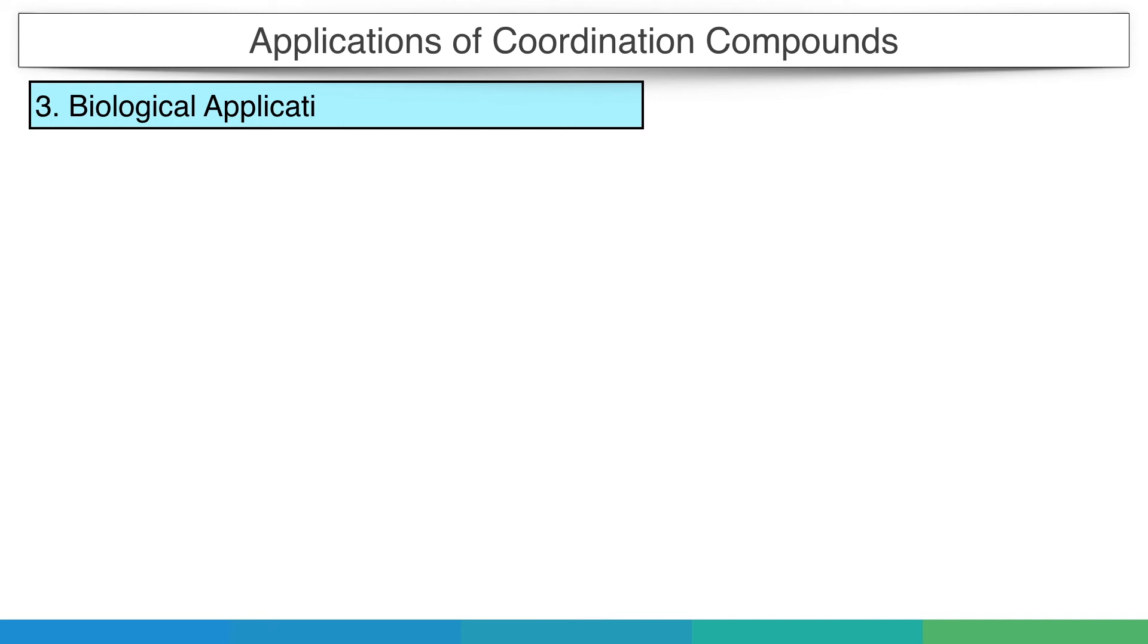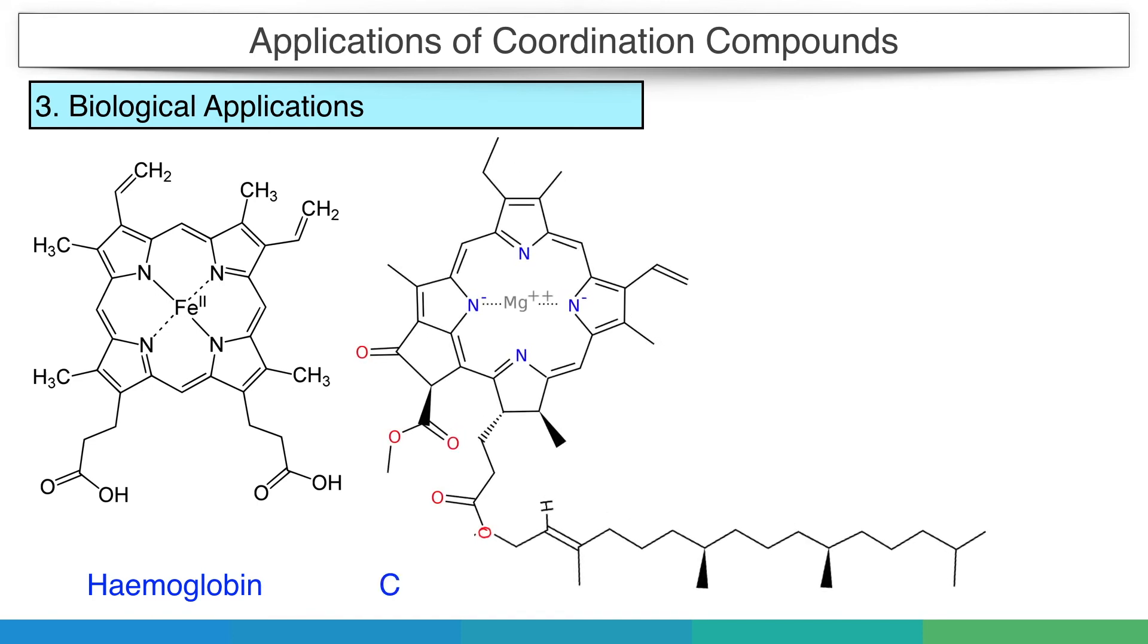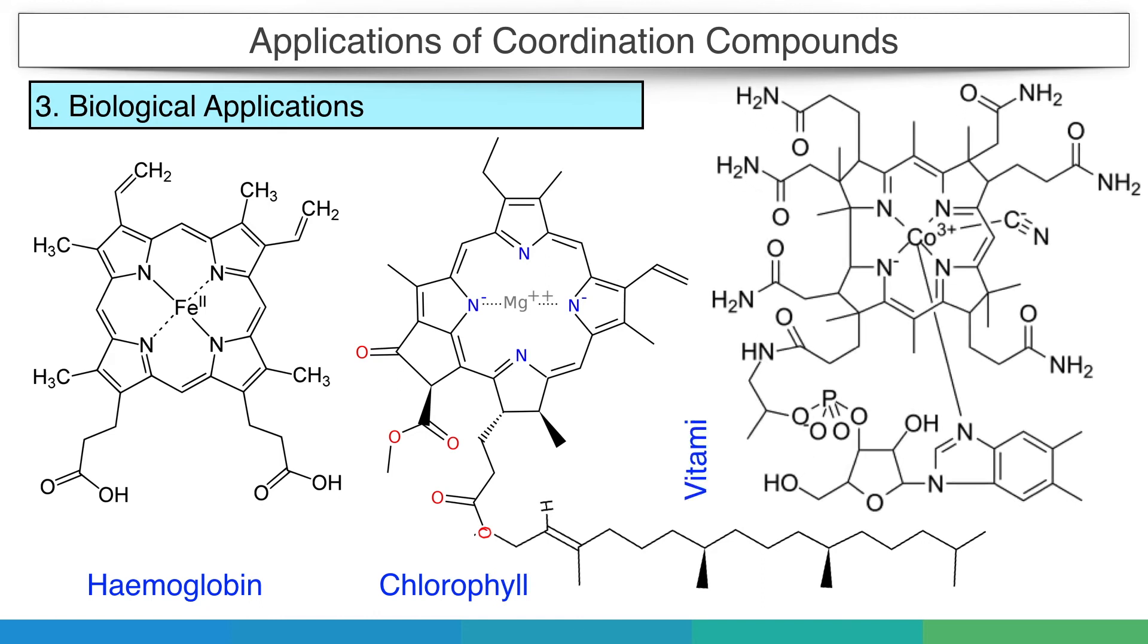Third, biological applications. A number of metal complexes are of biological importance. In particular, hemoglobin in red blood cells contains iron-porphyrin complex. Chlorophyll in green plants contains magnesium-porphyrin complex and vitamin B12 is a cobalt complex.